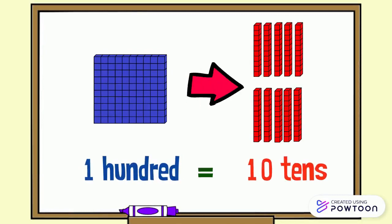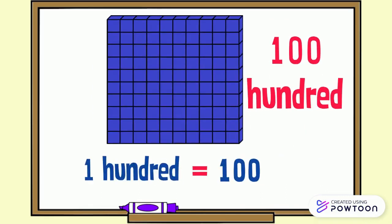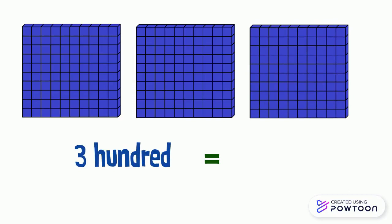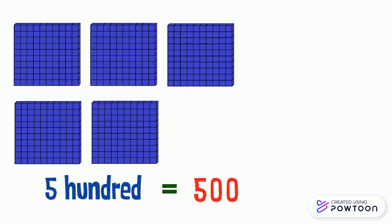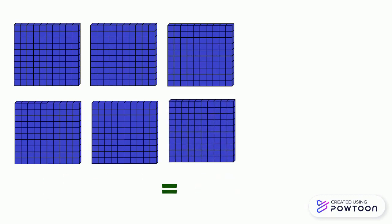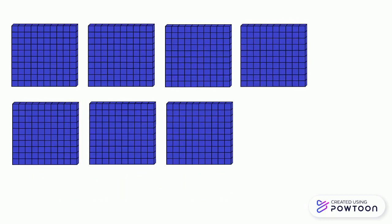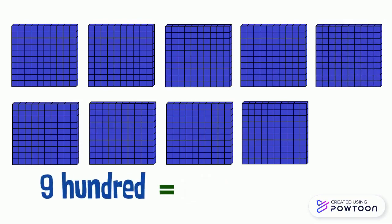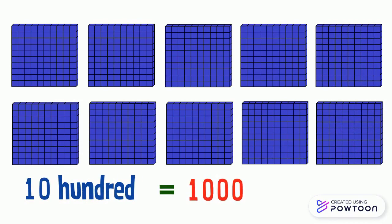One hundred equals ten tens. One block of hundred equals one hundred. Two blocks of hundred equals two hundred. Three blocks of hundred equals three hundred. Four blocks of 100 equals 400, five blocks of 100 equals 500, six blocks of 100 equals 600, seven blocks of 100 equals 700, eight blocks of 100 equals 800, nine blocks of 100 equals 900, ten blocks of 100 equals 1000.